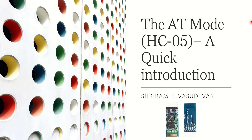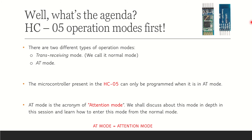Welcome back. In this session we will understand something called AT mode, which is very specific to the HC-05. We are going to learn what exactly AT mode is and have a quick demo. There are two modes of operation in HC-05: the first is called trans-receiving mode — transmit and receive — which is the normal mode of operation. The second mode is AT mode.